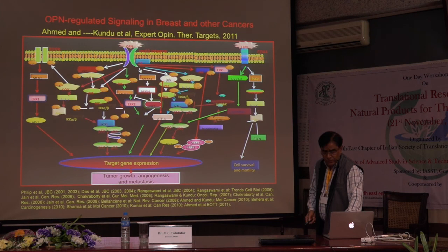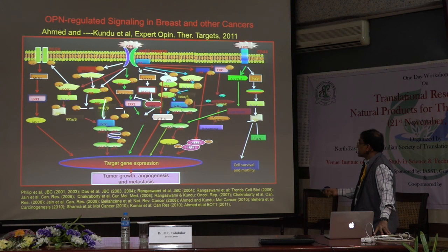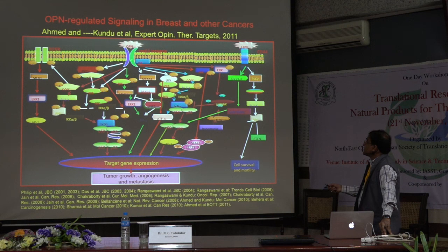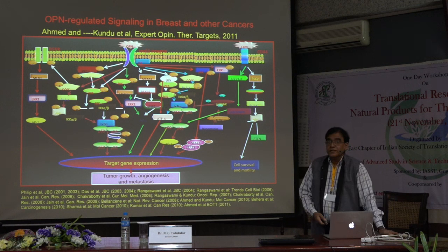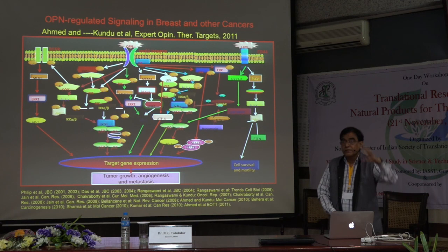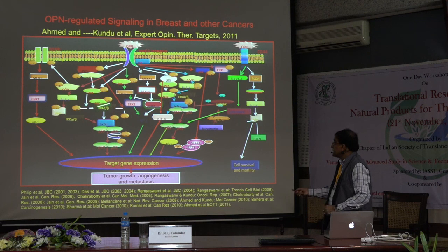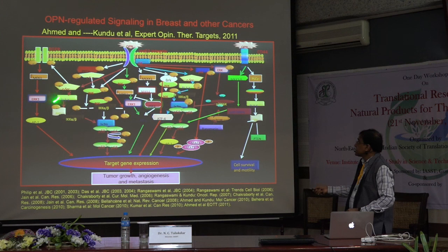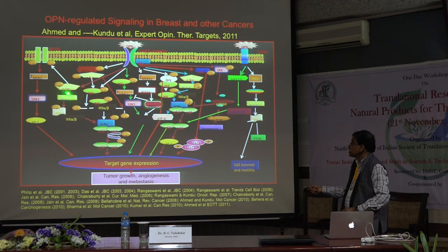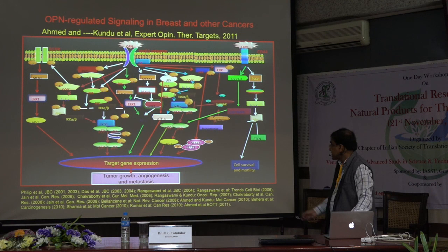For any disease — cancer, cardiovascular, or any other — if you want to understand the mechanism of disease, you have to understand the complex signaling mechanisms going on. You can see there are many kinases. It basically regulates EGF transactivation. There is one kinase called Src kinase — SRC — that regulates downstream pathways. Similarly, many other pathways basically regulate transcription factor-dependent downstream target gene expression, and regulate metastasis, growth, and angiogenesis.